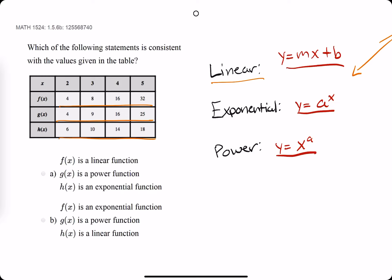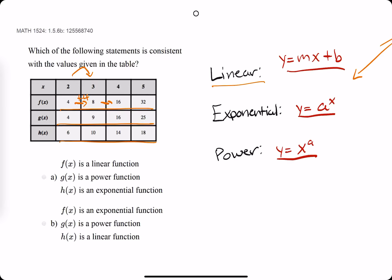So when we look at f, let's assume f is a linear function. As x increases from 2 to 3, y increases from 4 to 8, so it's adding 4 in between. So if f were linear, then that means from here to here, 8 to 16, we would also be adding 4. But that's not the case, because 8 plus 4 is 12. So just like that, we proved that f is not the linear function.